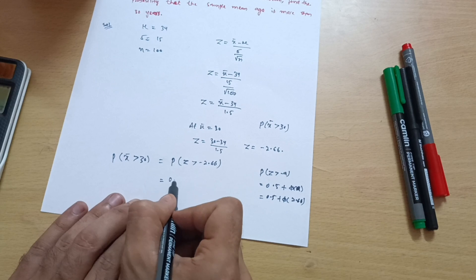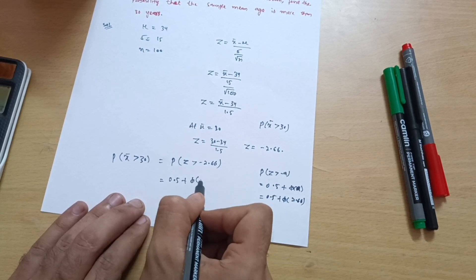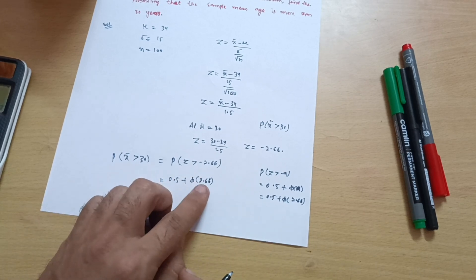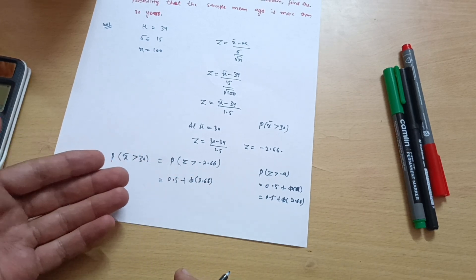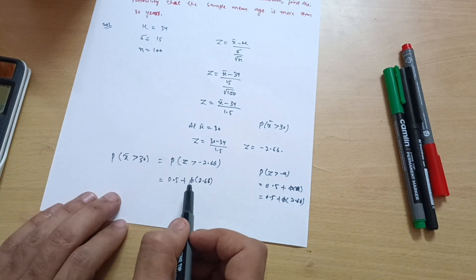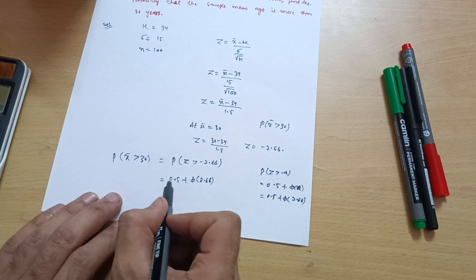Now you have to check this value 2.66, phi of 2.66, in the normal distribution table. In the previous video I have shown you how to calculate these values. You have to check row-wise and column-wise, so I hope you will calculate this one.